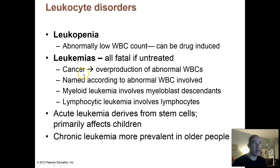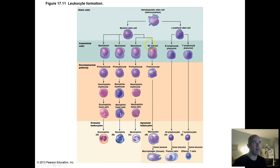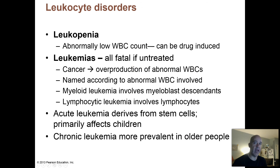Leukemias are cancers of white blood cells, where some type of immature white blood cell starts dividing in an out-of-control manner in the bone marrow. You just start overproducing these abnormal immature white blood cells, and this will eventually kill you. Any type of leukemia is eventually fatal if it's not treated.